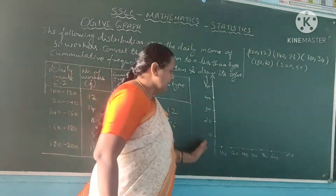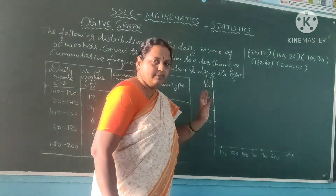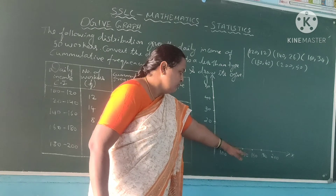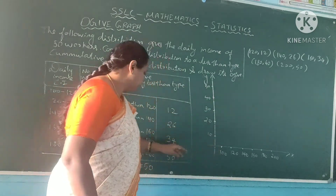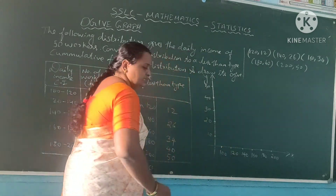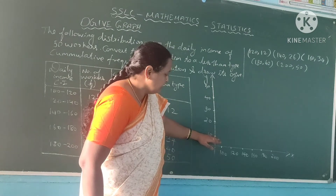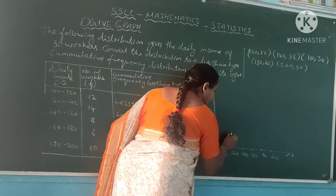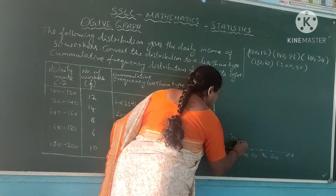Here I have taken the x-axis as the upper limit and the y-axis as the cumulative frequency. According to the numbers we should plot the points. I have taken 100, 120, 140 on the x-axis and 10, 20, 30 on the y-axis. Now the first value is 120 comma 12 — 120 is on the x-axis and 12 is on the y-axis. So 12 will come just after the 10 line, and these two lines come and join at the point 120 comma 12.